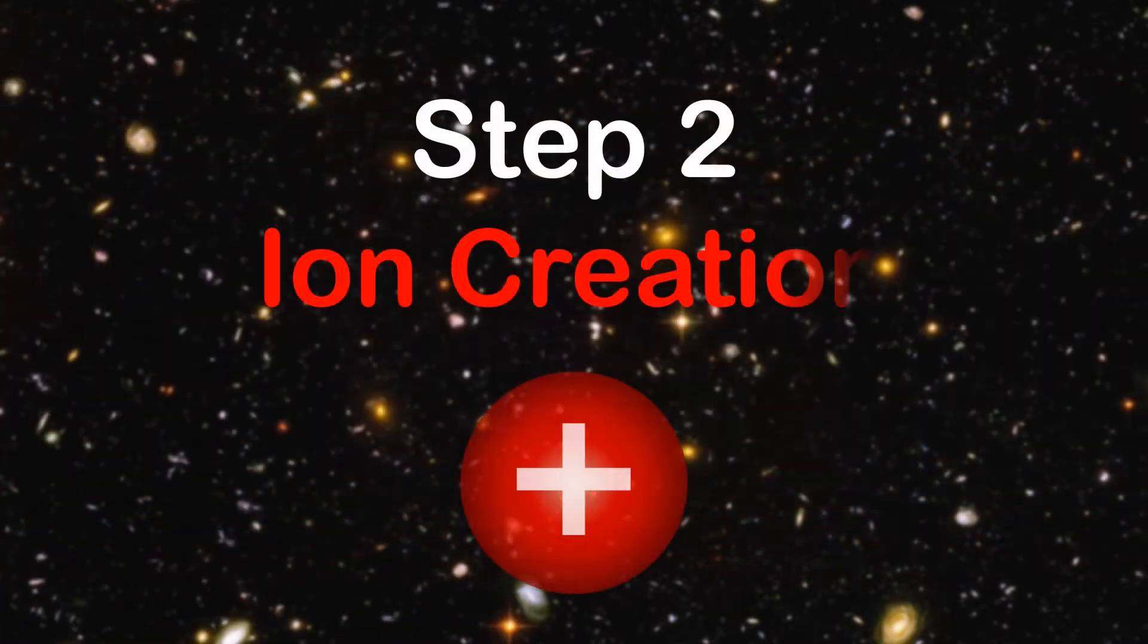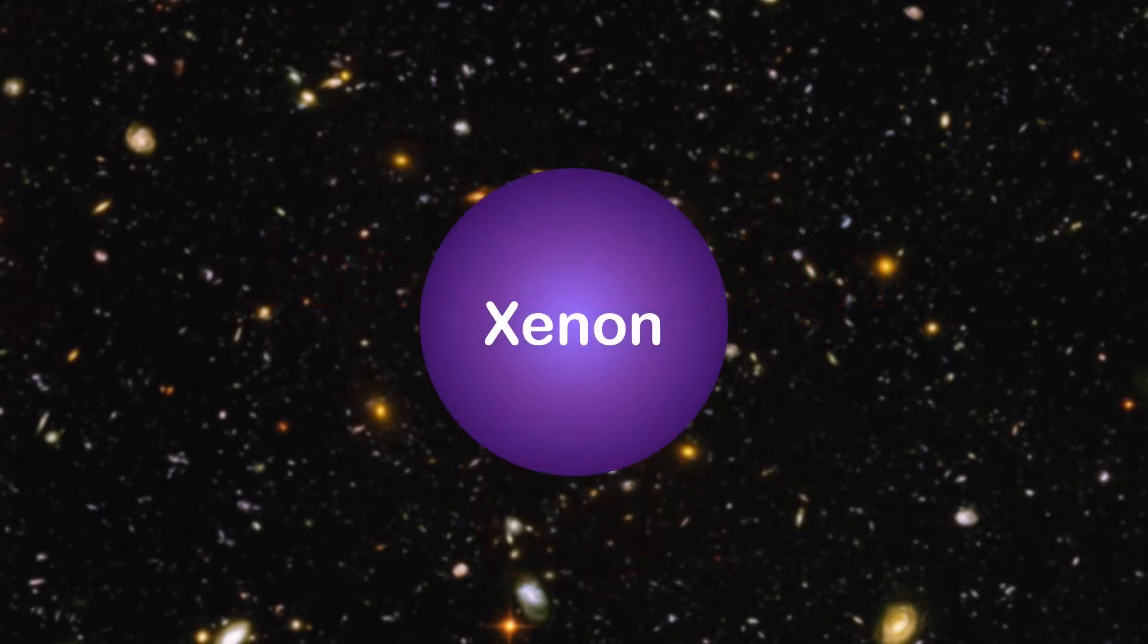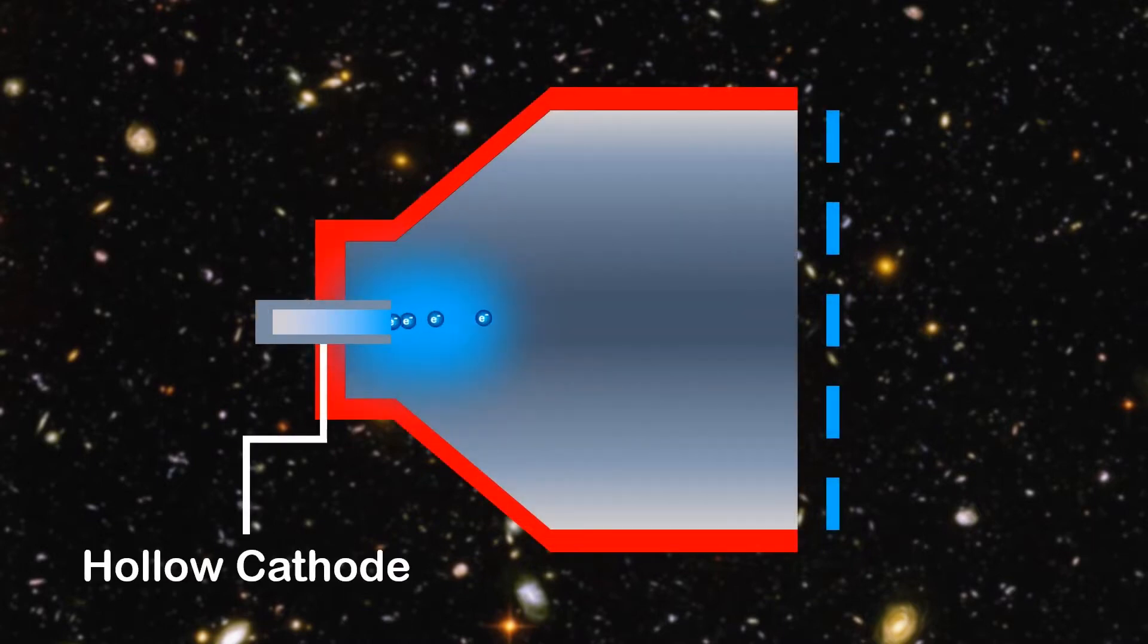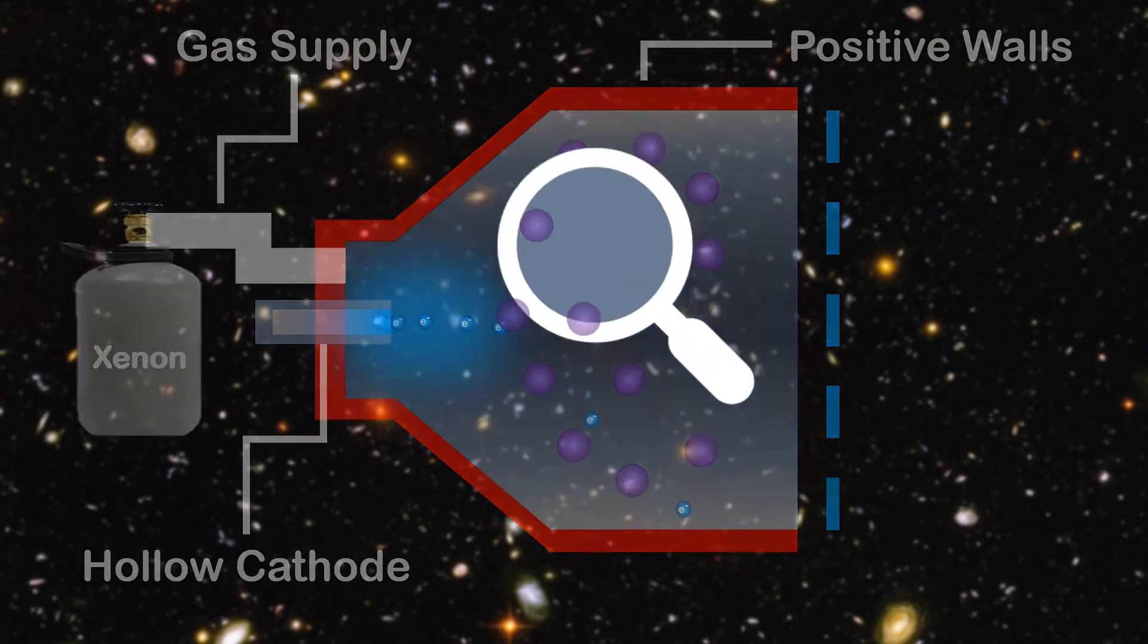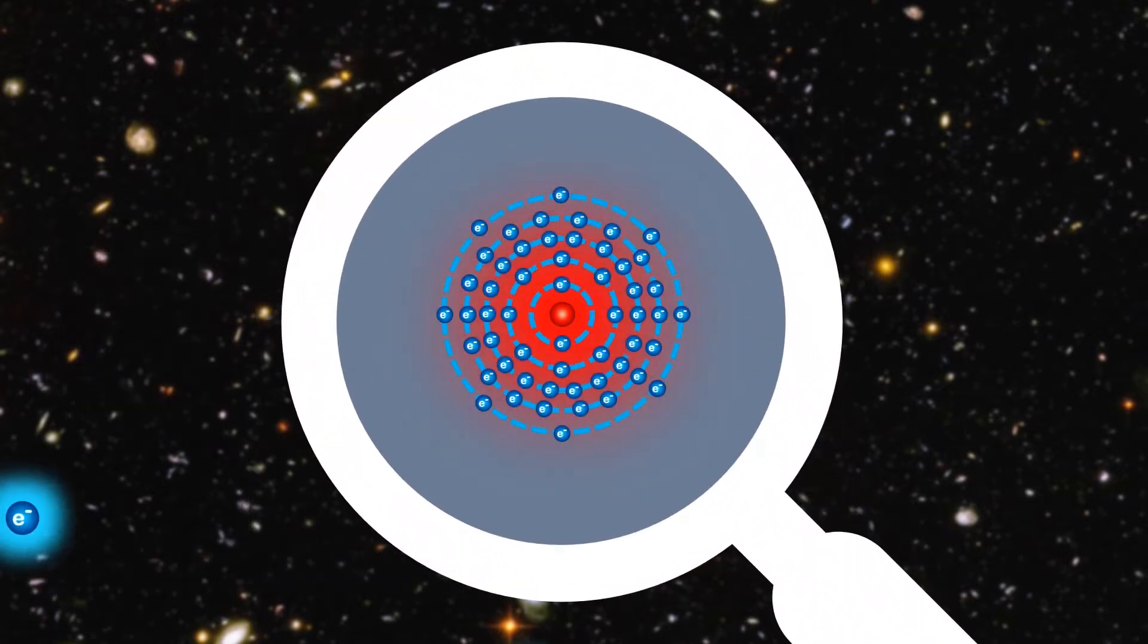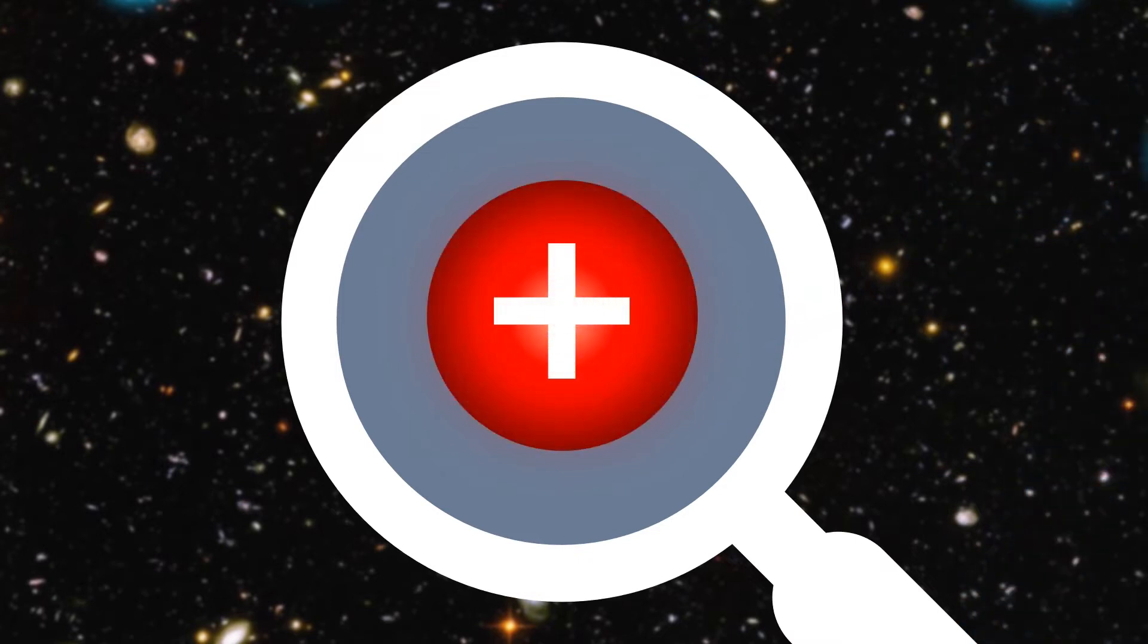But how are the ions created in the first place? Well, atoms are neutral, but if you remove an electron, it becomes positive. It turns into an ion. To do this, electrons are fired from an electron gun, called a hollow cathode, and are attracted toward the positive walls. Meanwhile, xenon atoms are released into the discharge chamber. On their journey to the walls, the electrons hit the xenon atoms with so much force that it knocks off one of its electrons. The xenon atoms turn into ions.